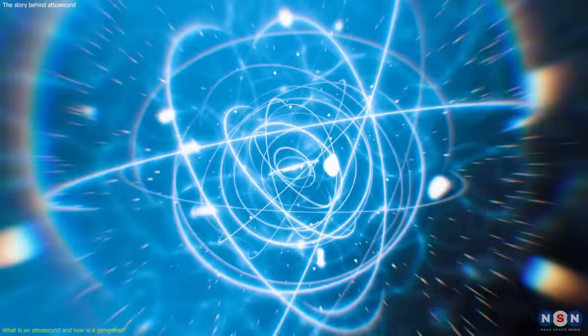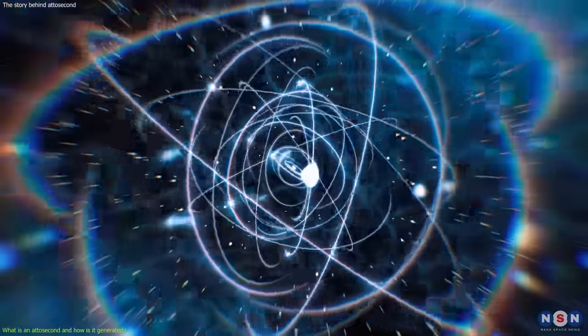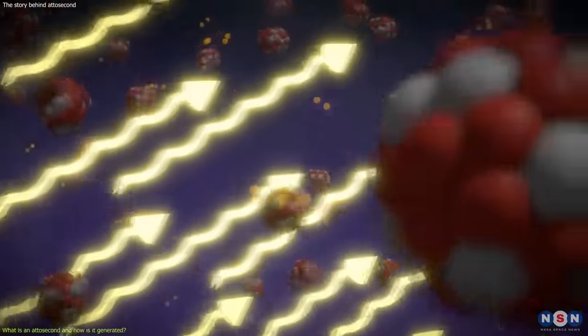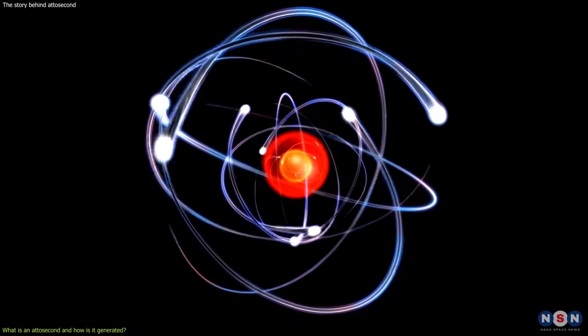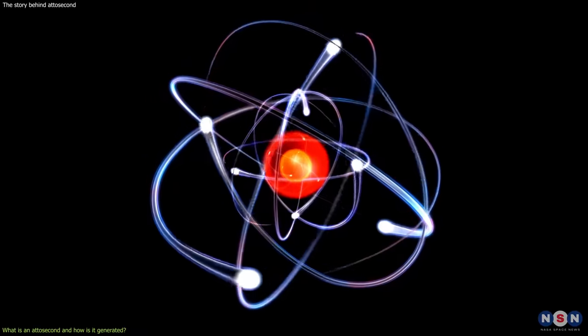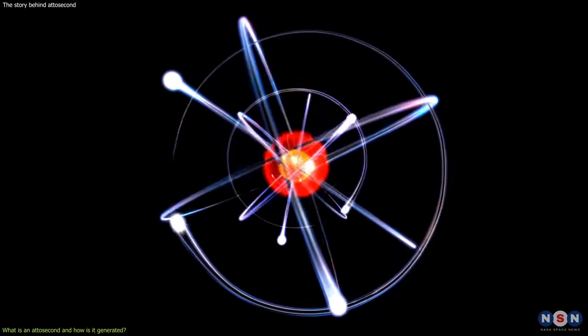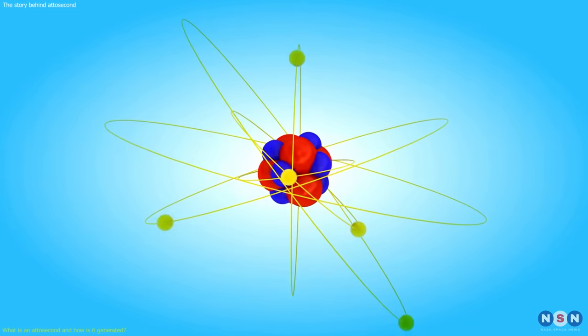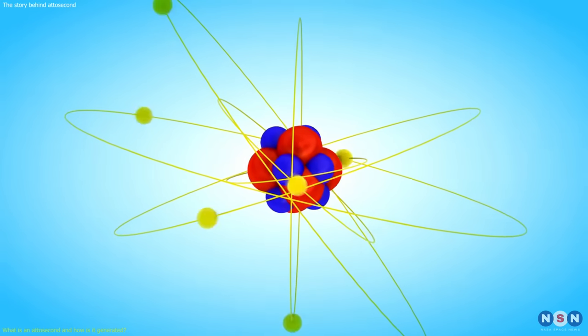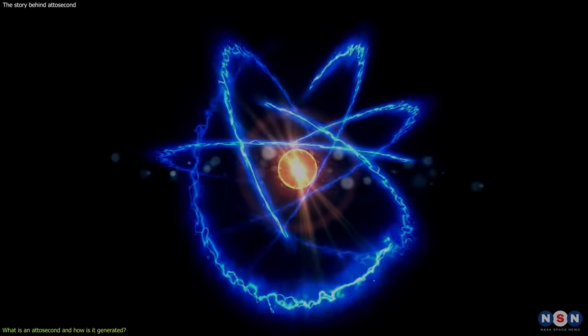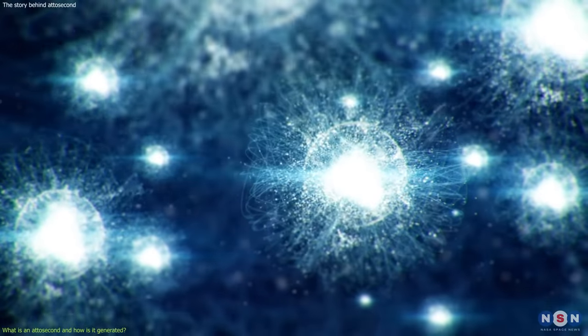Because that's how fast electrons move and rearrange themselves in atoms and molecules when they interact with light. Electrons are the tiny particles that orbit around the nucleus of an atom and form chemical bonds with other atoms. They are also responsible for most of the physical and chemical properties of matter, such as color, conductivity, magnetism, and reactivity.